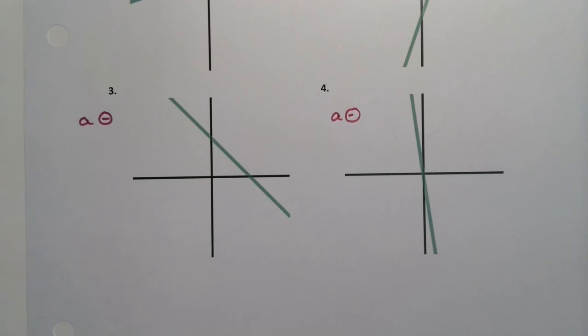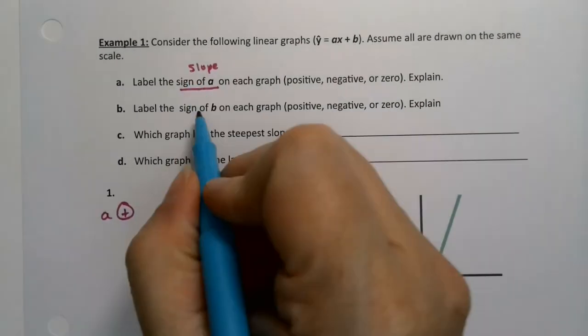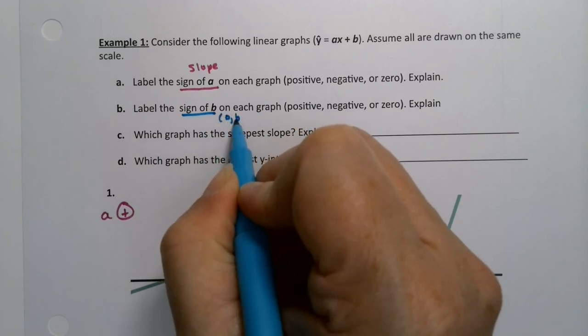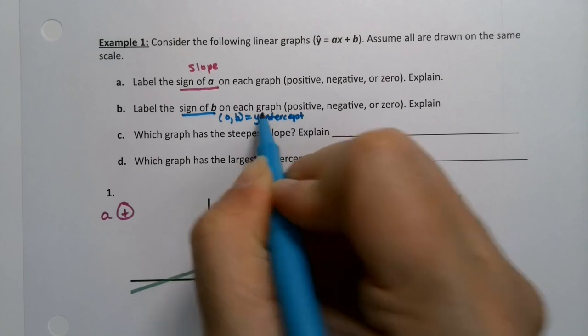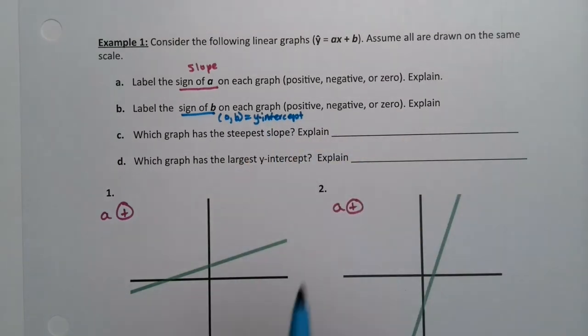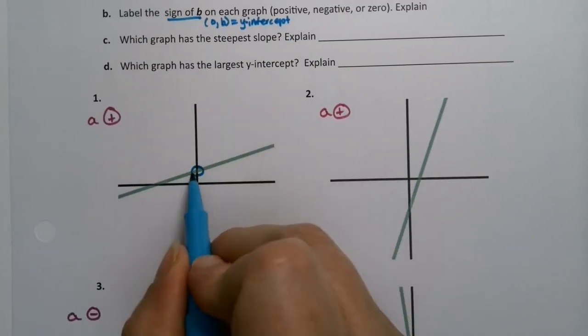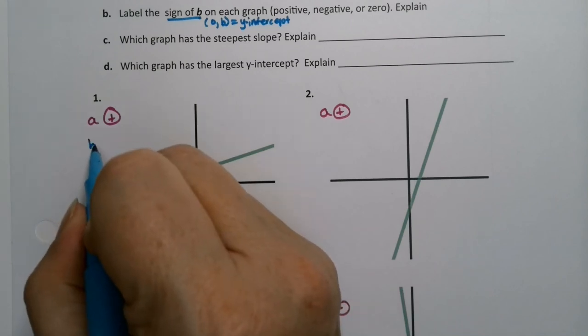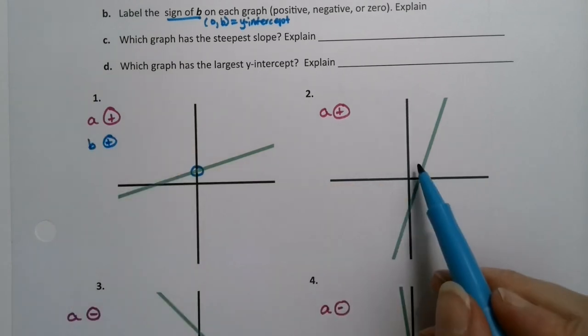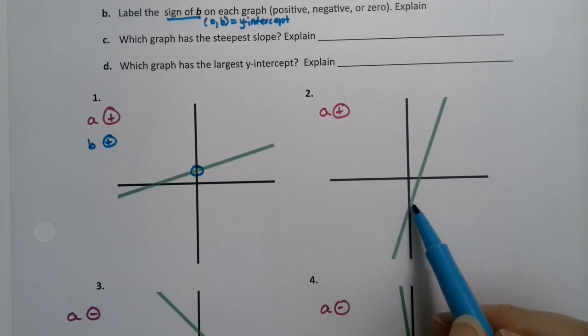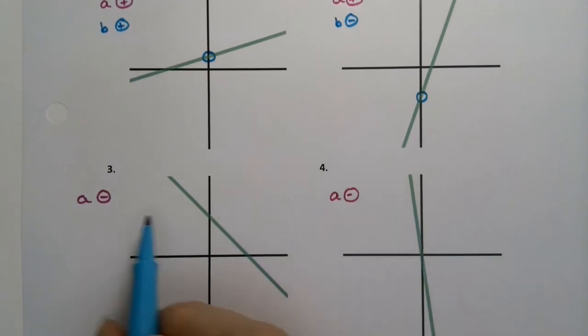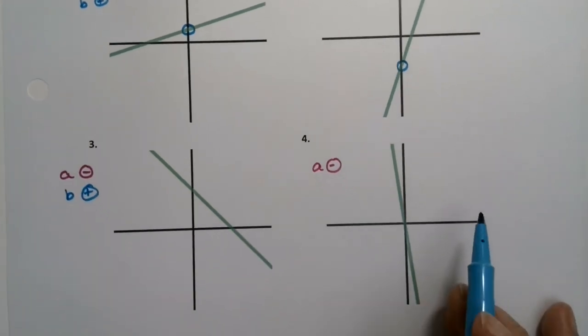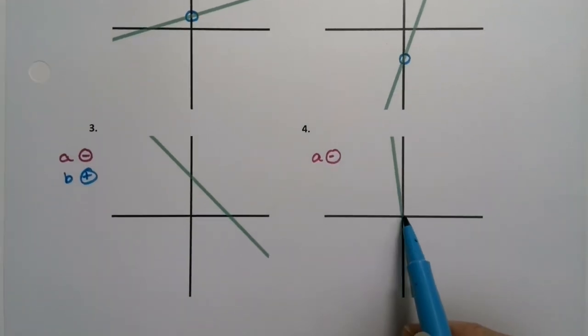Now b. b is the y-intercept. Well, it's the coordinate of the y-intercept, so 0, b is the y-intercept. Looking where this one hits, it hits above the x-axis, so that means b is positive. This one hits below the x-axis down here, so that means b is negative. This one's above again, so b is positive. And this one's actually at the x-axis, so that means b is zero for that one.